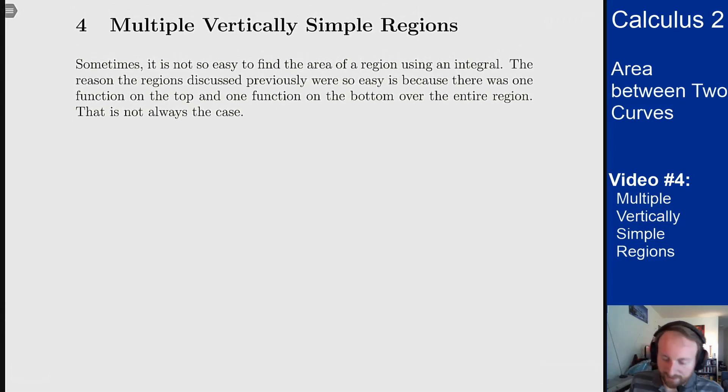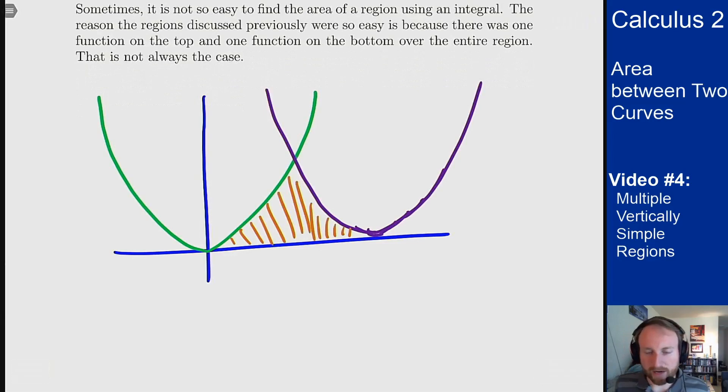So a region like this is something like this. Let's say I want to find the area of this orange region here. Well it's pretty simple. There's graphs of functions on all sides. That's great and easy to work with. But the issue is there's not always a single function on top or on bottom. For one part the green function is on top and then the x-axis or the blue line is on the bottom. For the other part the purple curve is on the top and the blue line is on the bottom. So how do we handle these sorts of problems?